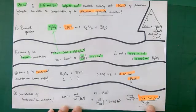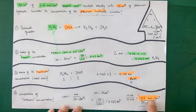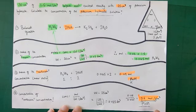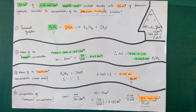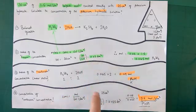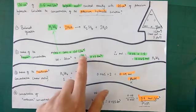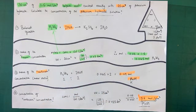If your final concentration value is huge — above about 10 mol/dm³ — you've probably forgotten to divide by 1,000 for one of those volumes. Always double-check every calculation before you roll on through.